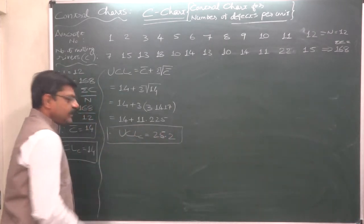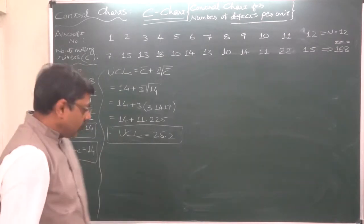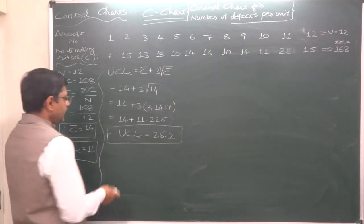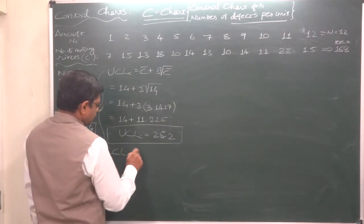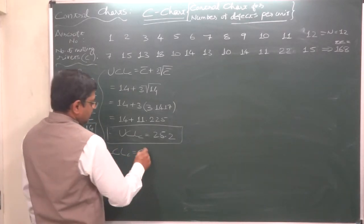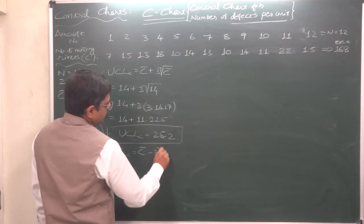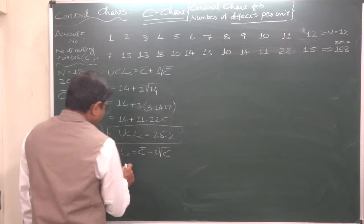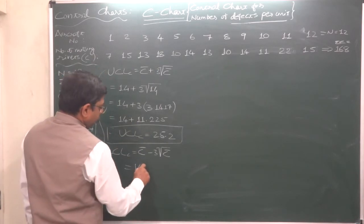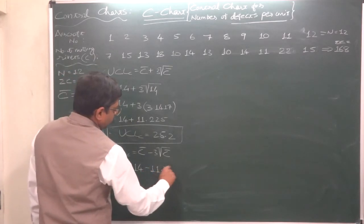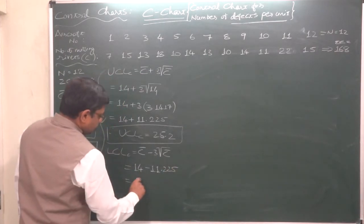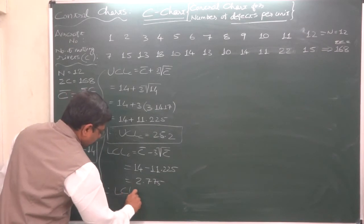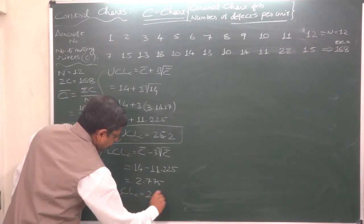We shall restrict it up to two decimal places because of the millimeter line on our graph paper. Now, lower control limit: C bar minus 3 into under root C bar. We have already calculated the right hand side after the minus sign, so it will be 14 minus 11.225. It comes to 2.775, so we take lower control limit as 2.8.